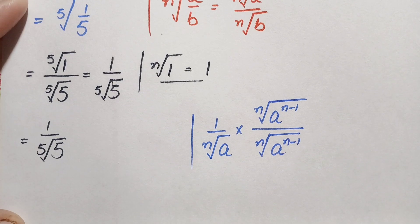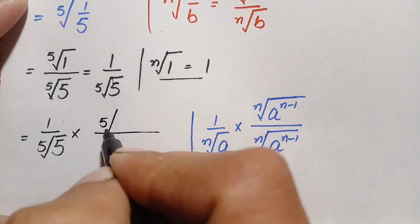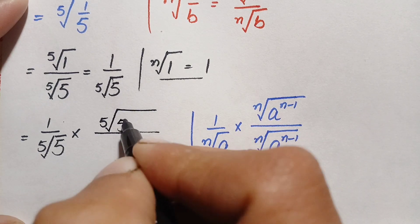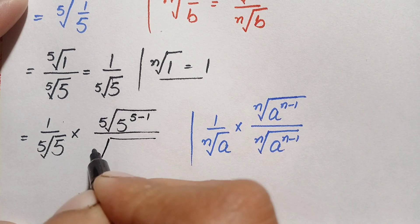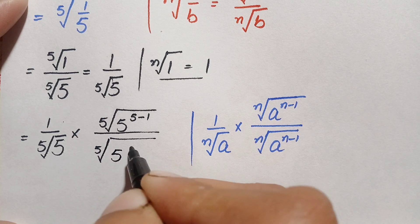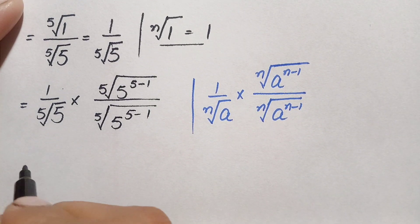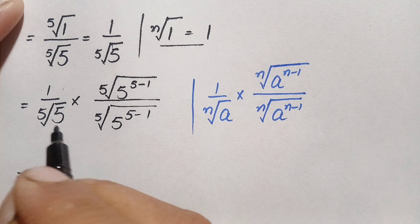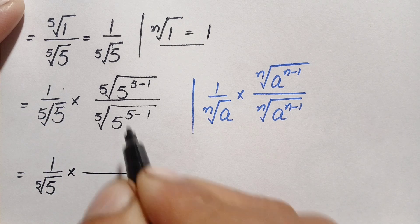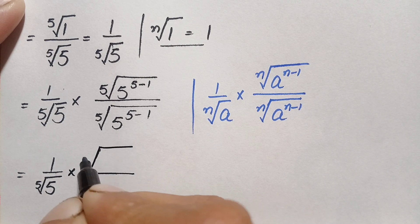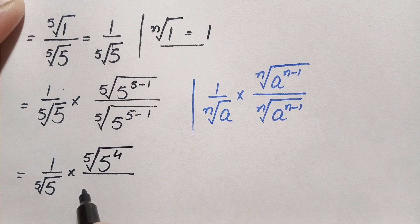Applying this result here, we multiply by the fifth root of five raised to the power five minus one, and also divide by the same. So the fifth root of five raised to the power n gives us five, and five minus one gives us four. The numerator becomes the fifth root of five raised to the power four.